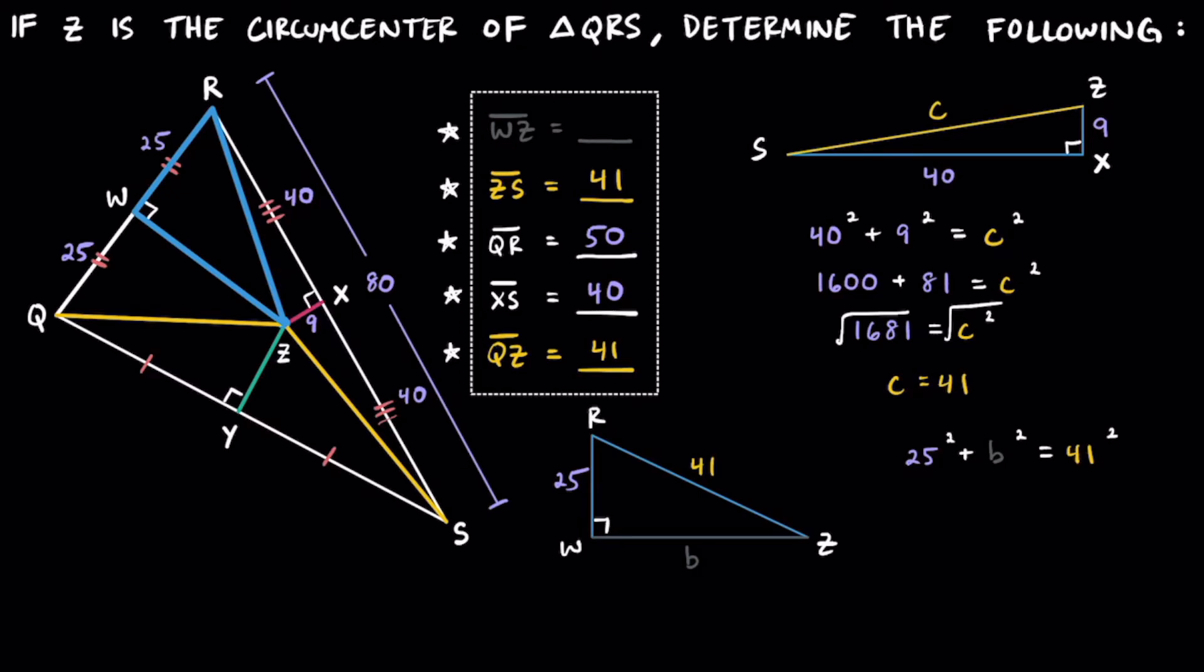So on the left side, 25 squared, that's going to be 625. And then we are going to still have this B squared, that is our unknown. And on the other side, let's see, what is 41 squared? 41 squared is going to be 1681.